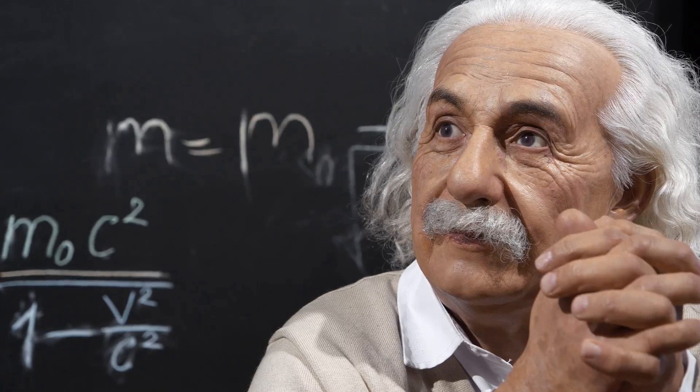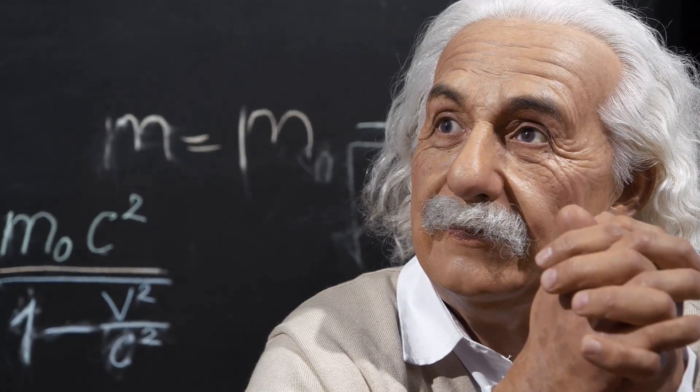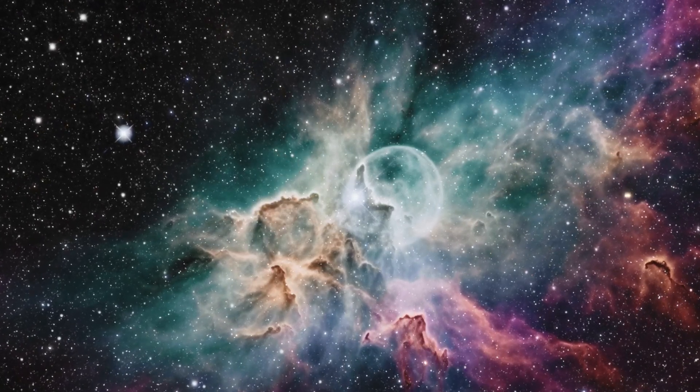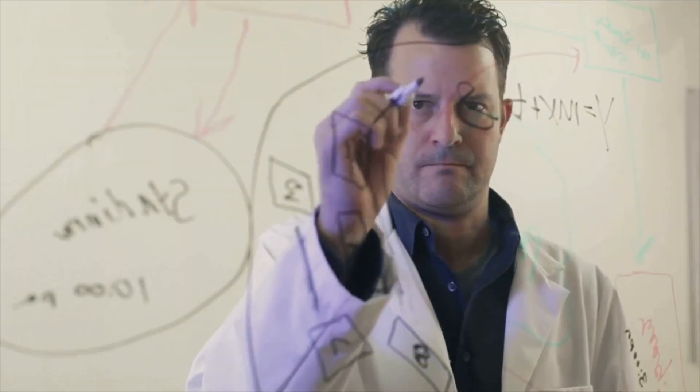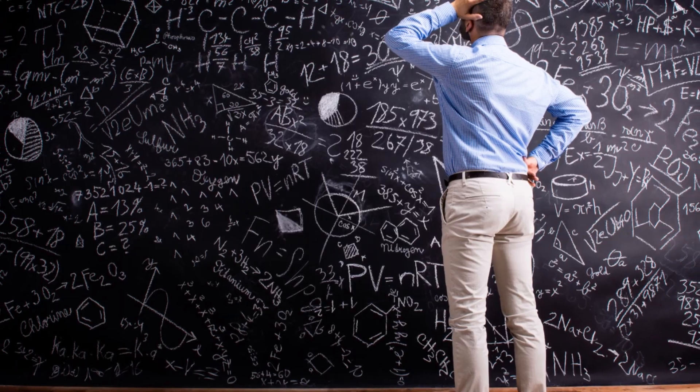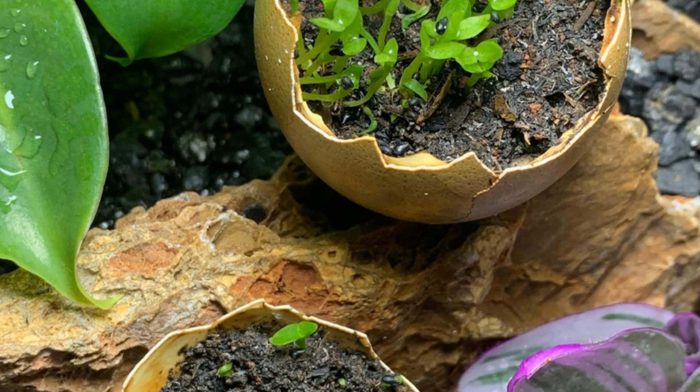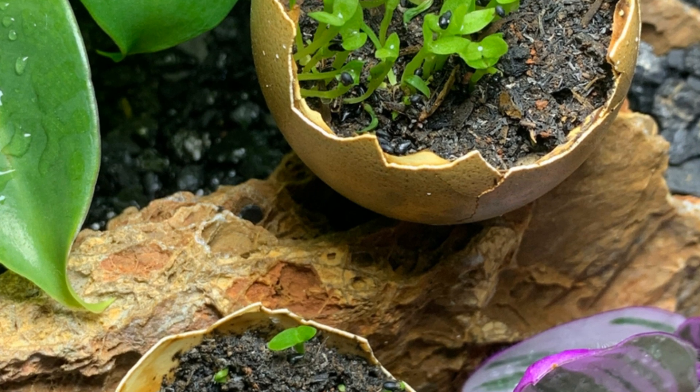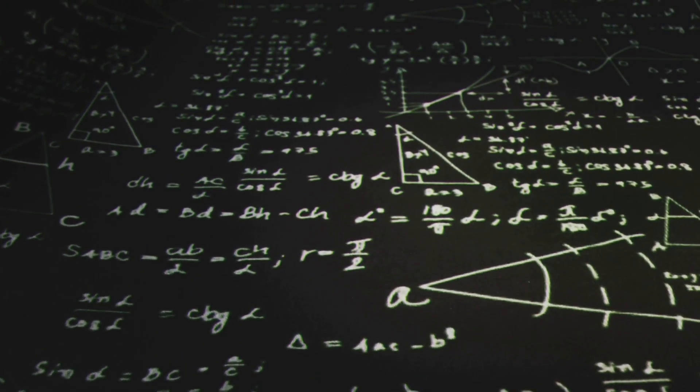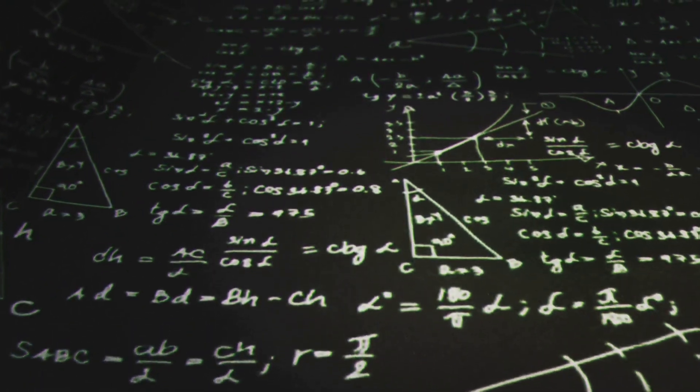Maupertuis's principle of least action was a bold claim. It suggested that there was a fundamental principle governing the behavior of the entire universe. However, his ideas were met with skepticism and debate. Some accused him of plagiarism, others struggled to grasp the concept of action. Despite the controversy, Maupertuis had planted the seeds for a revolutionary idea. His work laid the foundation for a more comprehensive and mathematically rigorous formulation of the principle of least action.